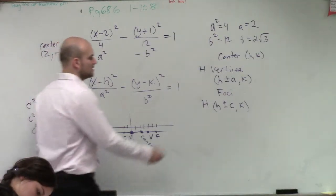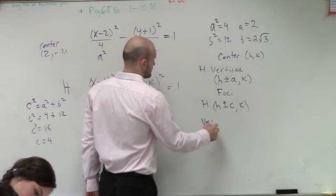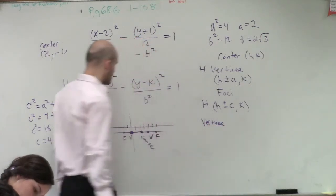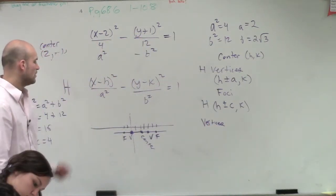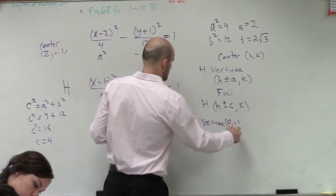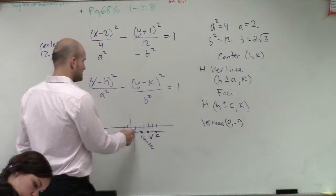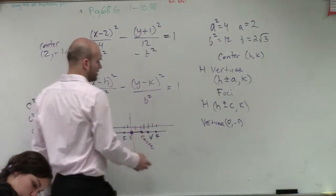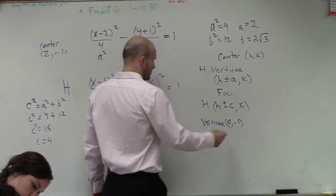So now I just need to determine these points. So my vertices are going to be the points at 0, negative 1, and 1, 2, 3, 4, 4, negative 1.